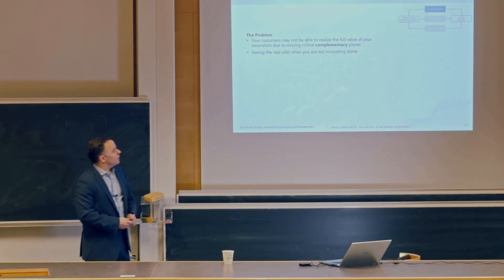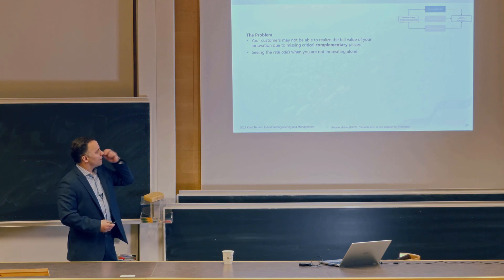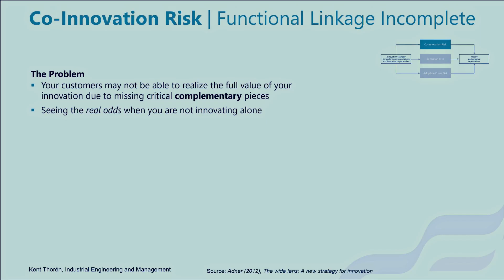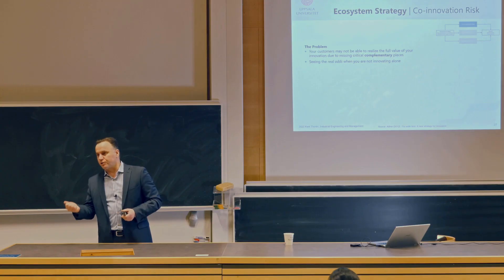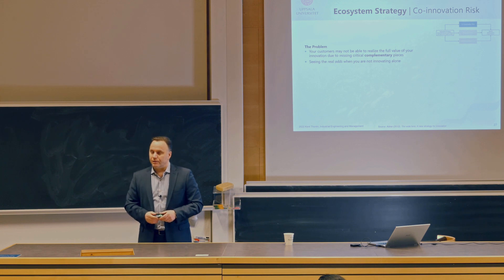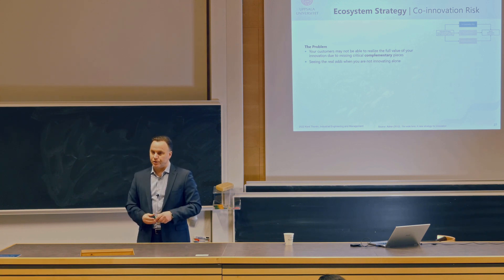The problem with the co-innovation risk is that to realize the full value of our innovation, customers must also have other things. We need to see if there are things missing or that need to be changed — things required as complementary and enabling functions. We need to be able to think about the odds for those to happen, and decide: is this the right strategy, or do we go back and redo the strategy?